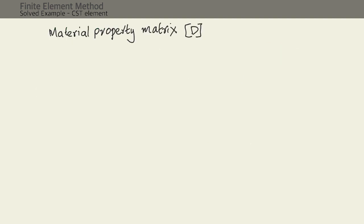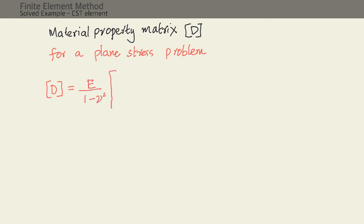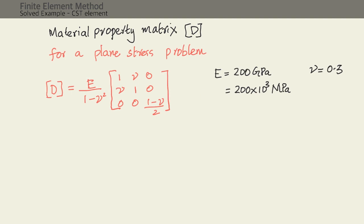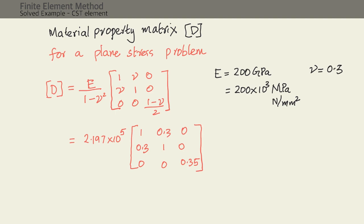Let's first calculate the material property matrix D. For a plane stress problem, D equals E divided by (1 minus nu squared) times the matrix [1, nu, 0; nu, 1, 0; 0, 0, (1-nu)/2]. The value of E is 200 GPa, which we substitute as 200×10³ MPa (i.e., 200×10³ N/mm²). Poisson's ratio is 0.3. Substituting these values gives us the D matrix.